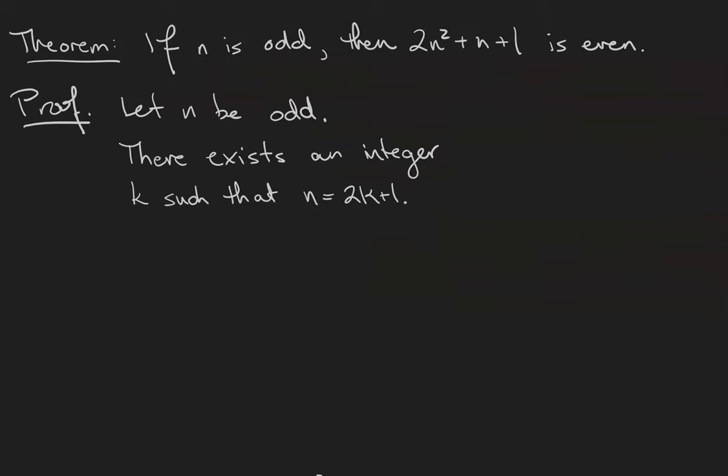We can talk about proofs all day, but the easiest way to learn how to write them is to just do it. So here is a theorem: If n is an odd integer, then 2n squared plus n plus 1 is going to be even.